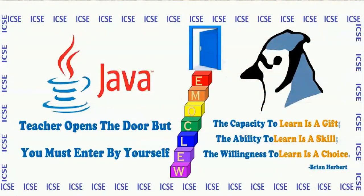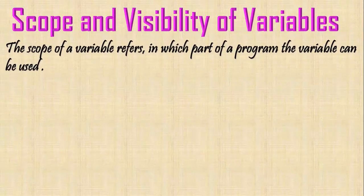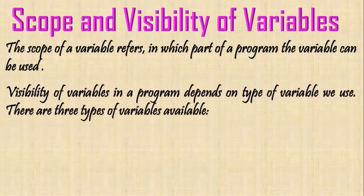Welcome back students. In this video lesson, we will learn scope and visibility of variables. The scope of a variable refers to which part of the program the variable can be used. Visibility of variables in a program depends on the type of variables we use.